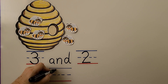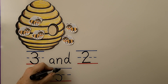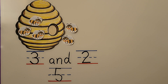We count one, two, three, four, five. We can write five. Three and two is five. The word 'and' told us to add the numbers and put them together. Now there are five bees at the hive.